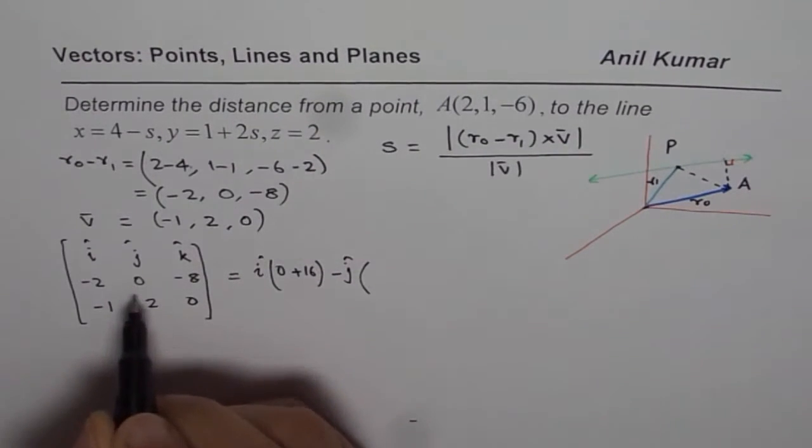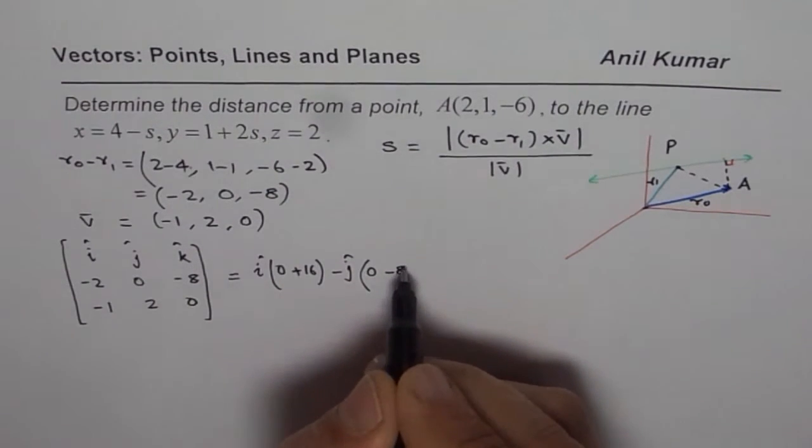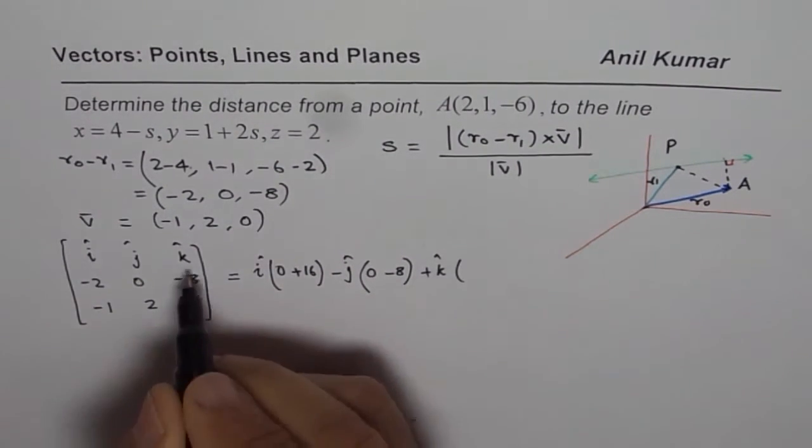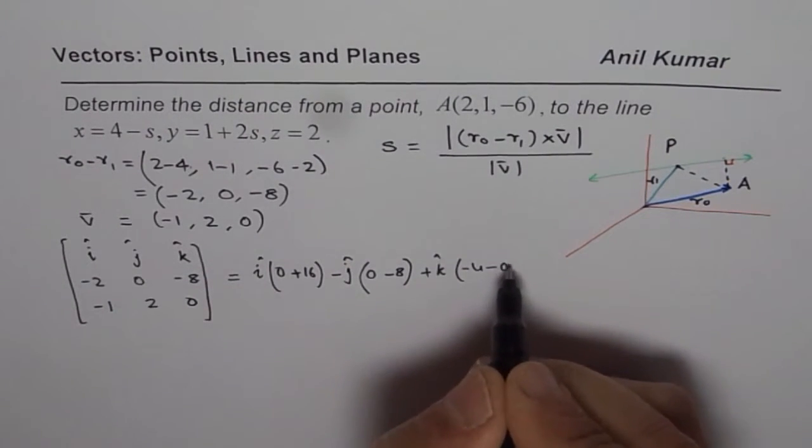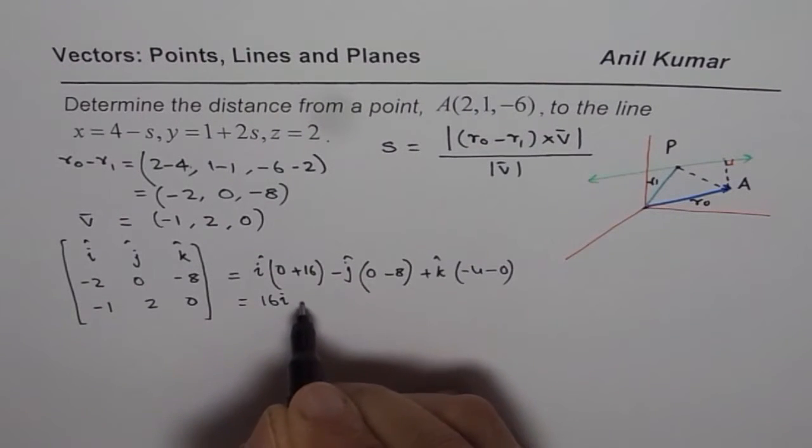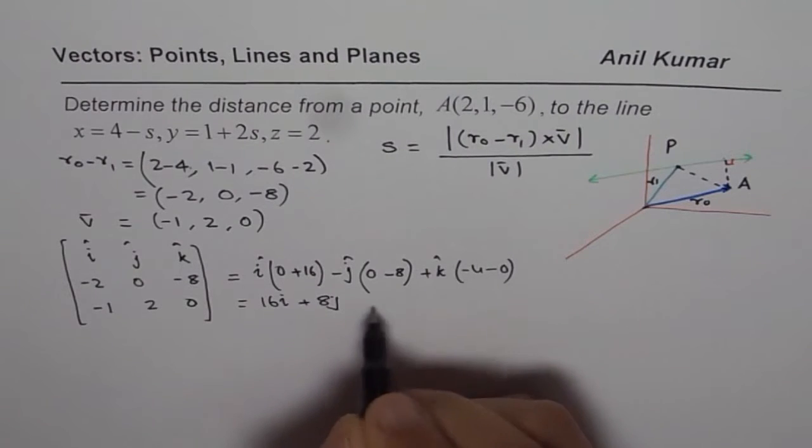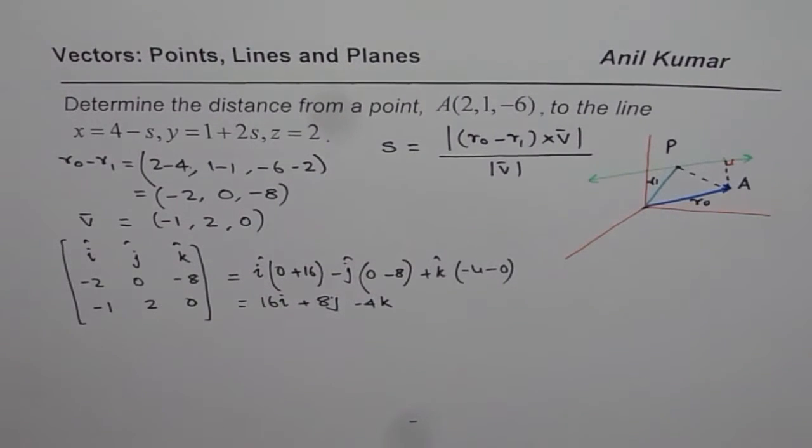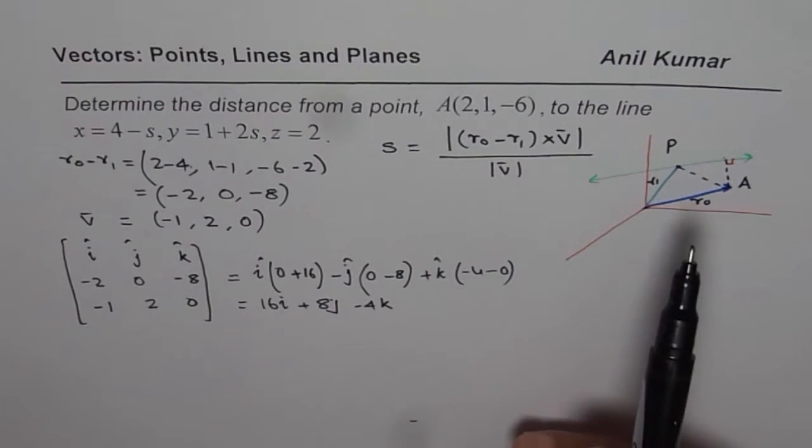And for j, that is 0, minus 8, plus k, minus 4, minus 0. Let me write here itself, 16i, plus 8j. And this is minus 4k, minus 4k. So that is the numerator of the distance.